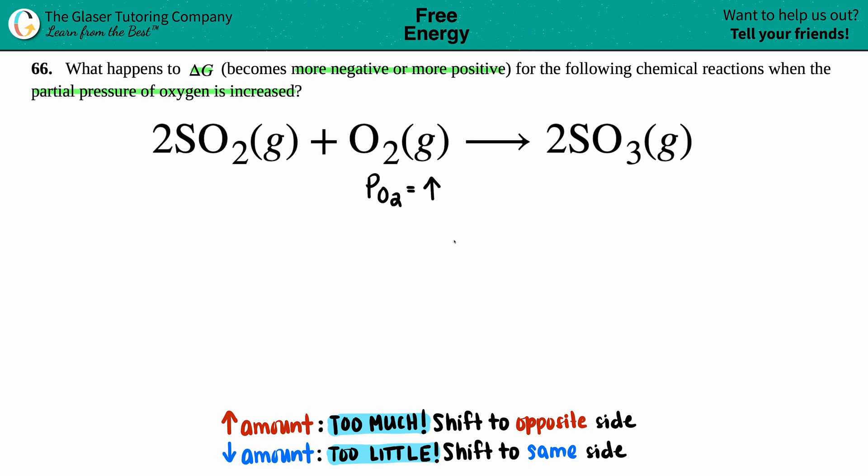Now what's going to happen to the delta G? Is it going to become more positive or more negative? This all comes back to Le Chatelier's principle. Whether you increase your amount of something, in this case we're dealing with pressures, but if you increase an amount of something, equilibrium has to shift to get you back to where you were.